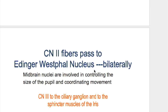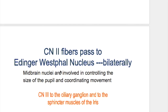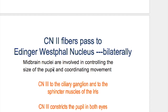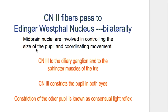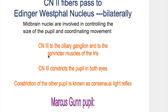The importance of bilateral innervation is that when light falls on one pupil, it constricts both pupils. Constriction of the other pupil is known as the consensual light reflex. Midbrain nuclei are involved in controlling the size of the pupil and also coordinating movement. The oculomotor nerve passes from the Edinger-Westphal nucleus to the ciliary ganglion and to the sphincter muscle of the iris.